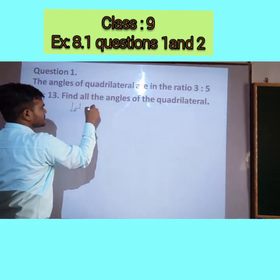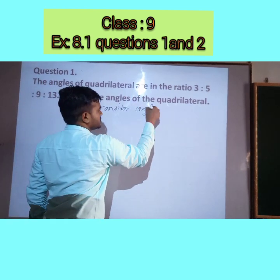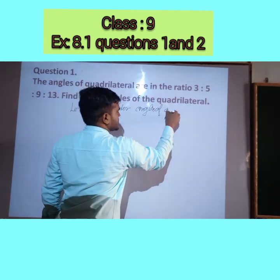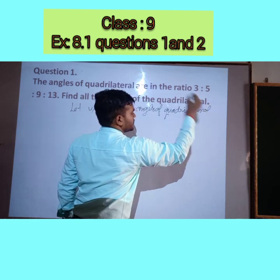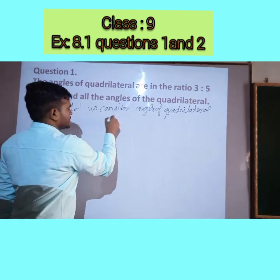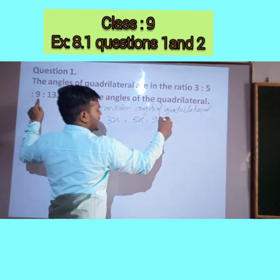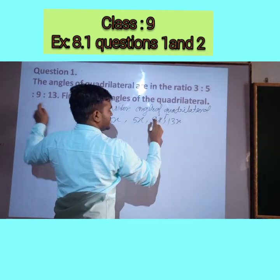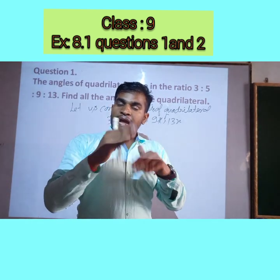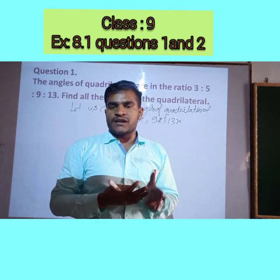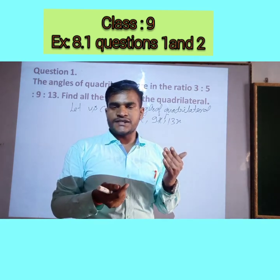Let us consider the angles of the quadrilateral as 3x, 5x, 9x, and 13x. In our first class we learnt the angle sum property of a quadrilateral — the sum of all angles of a quadrilateral is 360 degrees.